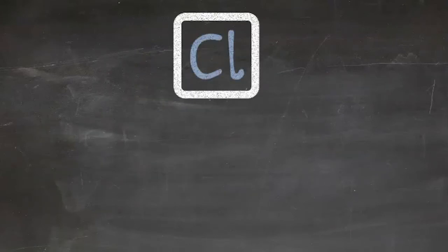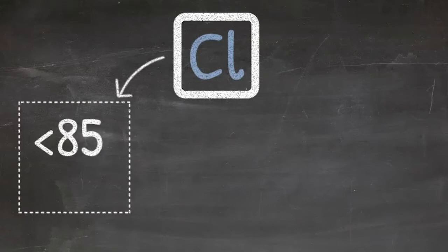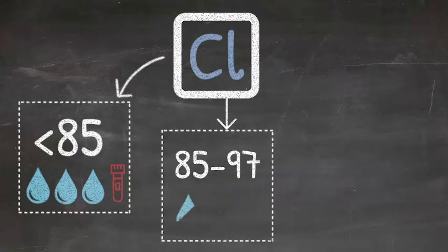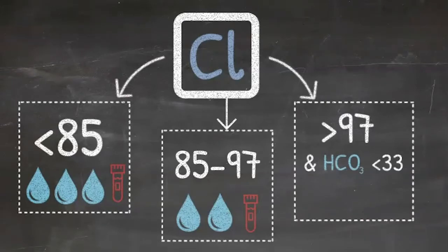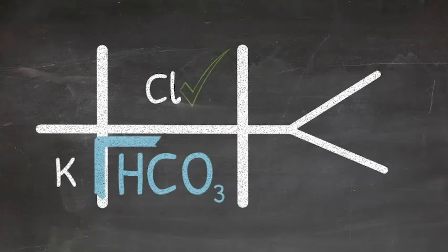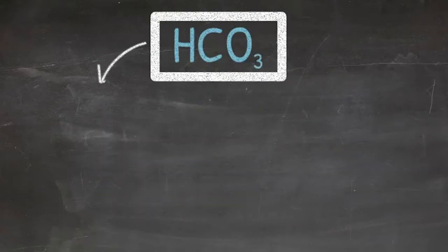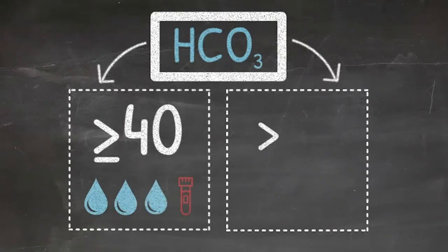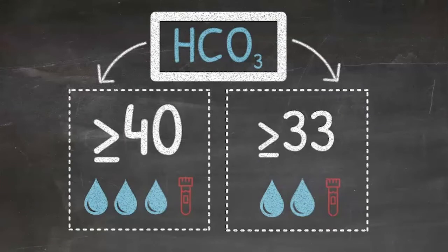Essentially, you first resuscitate based on chloride levels. If chloride is less than 85, give three boluses, which are usually separated by an hour, and then recheck labs. If chloride is between 85 and 97, give two boluses. If chloride is greater than 97, give one bolus. If chloride is normal, the resuscitation is based on bicarb. If bicarb is greater than 40, give three boluses. If bicarb is greater than or equal to 33, give two boluses.